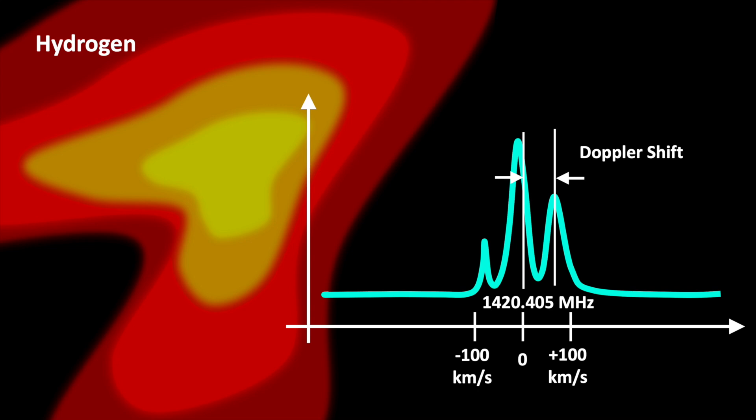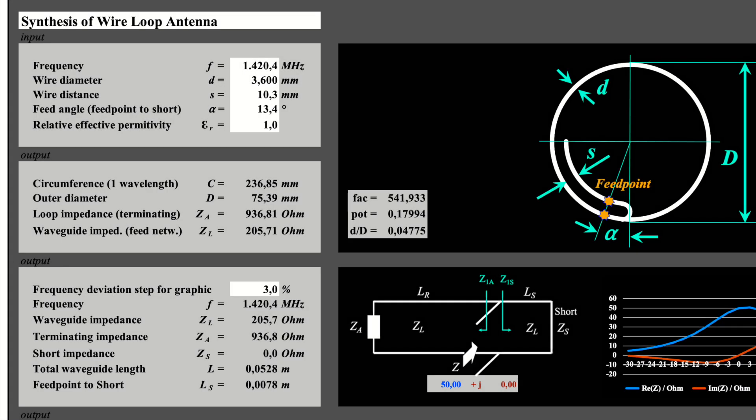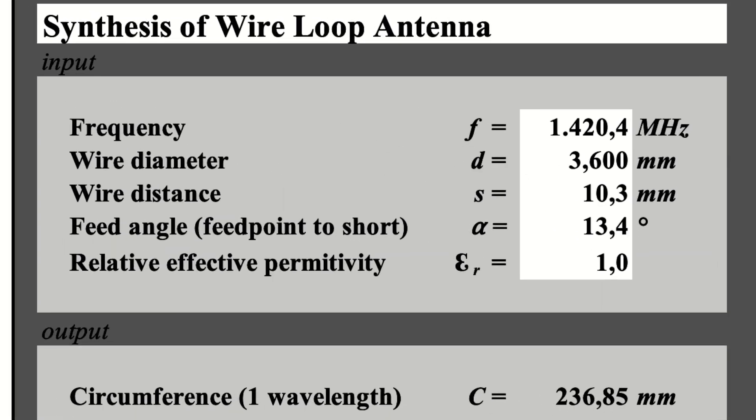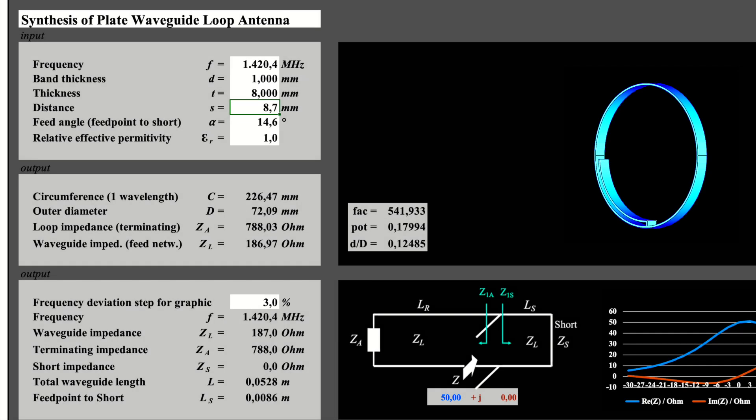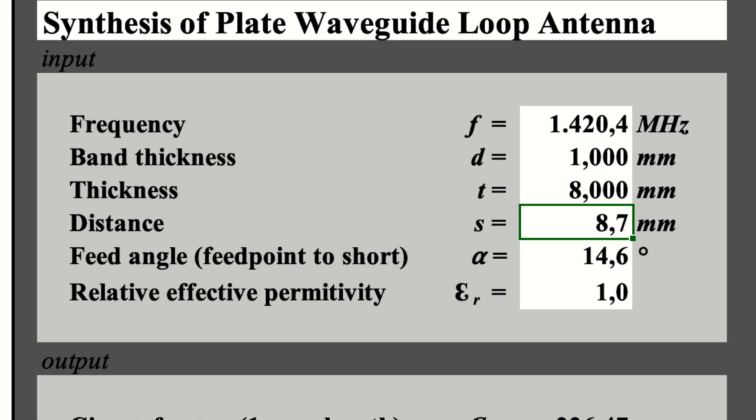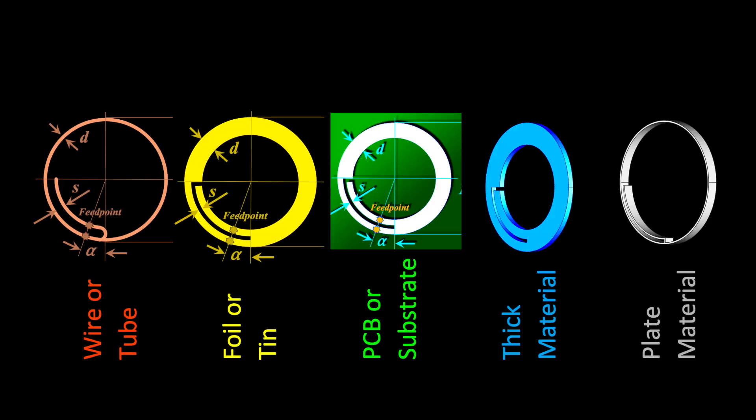The hydrogen radiation is revealing information about the density, distribution, speed, and temperature of hydrogen atoms in the universe. Here is the dimensioning for the construction made of 3.6 mm copper wire. And here is an alternative design made from copper plate. Our Excel tool is comprising even more interesting designs. Feel free to watch the videos.